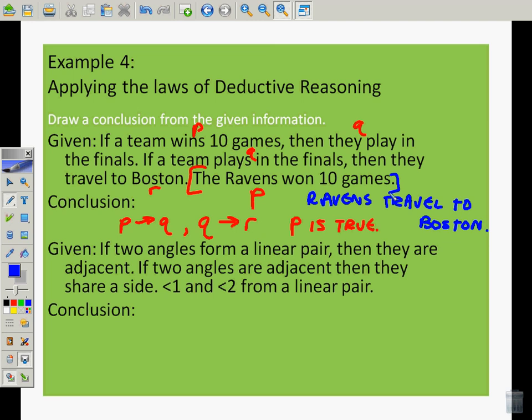I'm going to do likewise for the bottom one. If you want to pause it, that's more than fine. If two angles form a linear pair, P, then they are adjacent, Q. If two angles are adjacent, Q, then they share a side, R. Angle 1 and angle 2 form a linear pair. So let's draw this out. If P then Q, if Q then R. And we are assuming that they form a linear pair. So what are we looking at here? We're looking at P is true. So P is true, what does that mean for us? What conclusion can we draw? Well, if they're a linear pair, then they're adjacent. So we can assume that they're adjacent, but we can also assume that because they're adjacent, then they share a side. So we could say angle 1 and angle 2 share a side. So you see how these chain laws and things work.